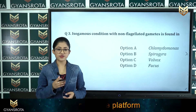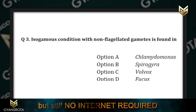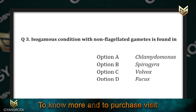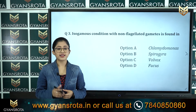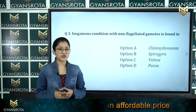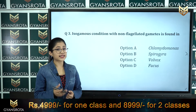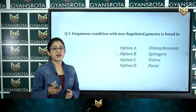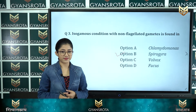Question number three: isogamous condition with non-flagellated gametes is found in — option A: Chlamydomonas, option B: Spirogyra, option C: Volvox, option D: Fucus. This is from class 12 chapter 2, sexual reproduction in flowering plants. The correct answer is option B, Spirogyra, which is an example where the isogamous condition with non-flagellated gametes is found.